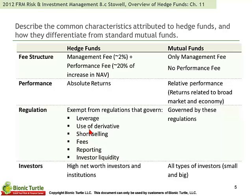These three — leverage, derivatives, and short selling — are pretty textbook when defining hedge funds. In some classic exam questions, you'd get three aspects: that they can employ leverage, that they can use derivatives, and that they're liberated to short sell. That doesn't mean a hedge fund uses all three — it's really a function of the fund's strategy. The investors in hedge funds tend to be high net worth investors and institutions, whereas mutual funds tend to attract all types of investors, including retail.